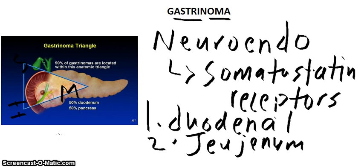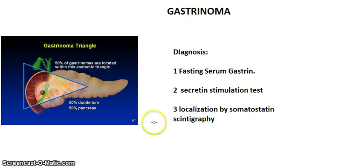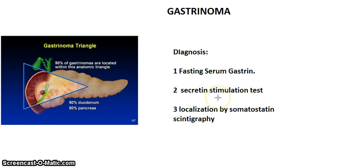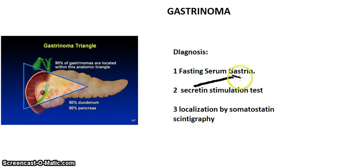For diagnosis, focus on three things. First, you can do a fasting serum gastrin. If the patient is not eating, there should be no gastrin released, but in these patients the serum gastrin will still be high in a fasting state. Second, you give the person secretin, which normally inhibits gastrin secretion, but in these patients even after giving secretin the gastrin level remains high.